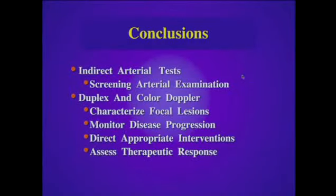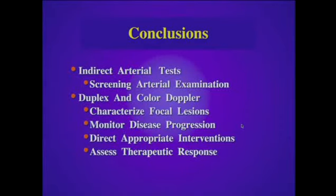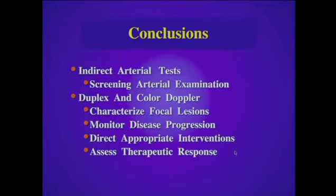In conclusion, in our evaluation for peripheral arterial disease, we find the indirect tests extremely helpful for screening and for determining the approximate location of peripheral arterial disease. We then utilize duplex and color Doppler to help characterize these focal lesions by location, degree, and extent. We can use this test to monitor disease progression, help direct appropriate intervention, and assess the therapeutic response to treatment. Thank you.